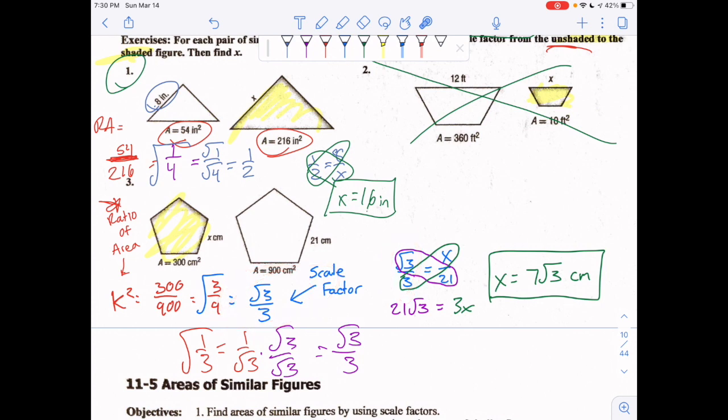Now this is your scale factor, so you set that up here. I went from shaded to unshaded for this one, just left to right. Shaded to unshaded: the x here on the right side should be from shaded to unshaded. Cross multiply and solve for x: 7 radical 3.